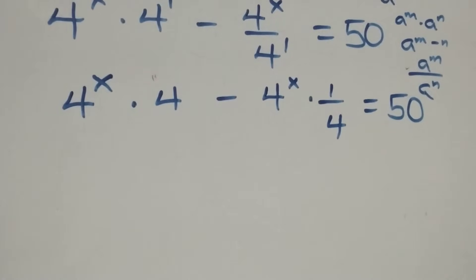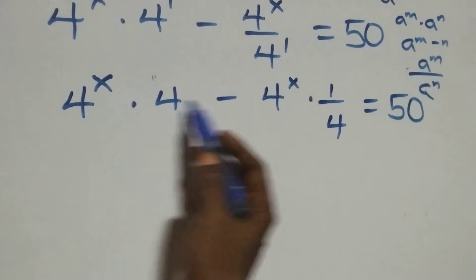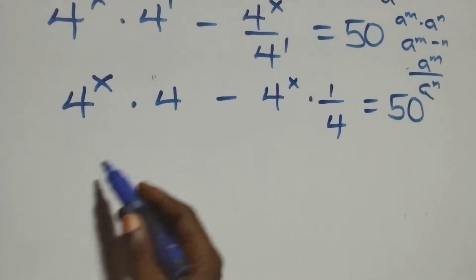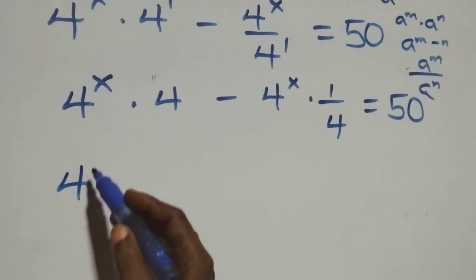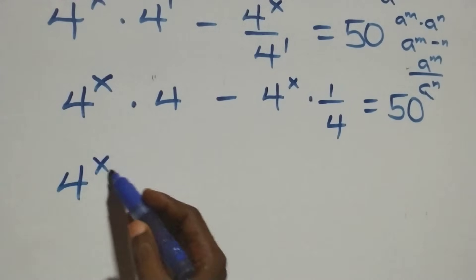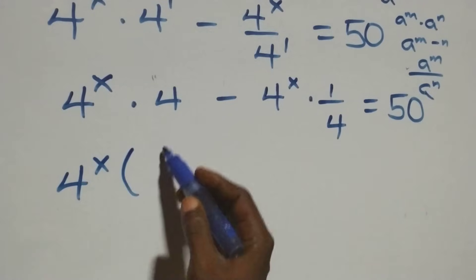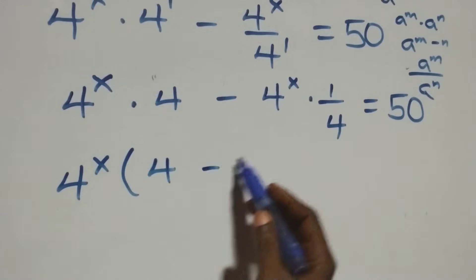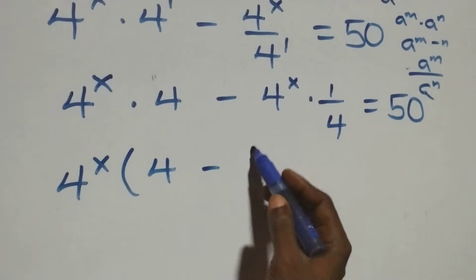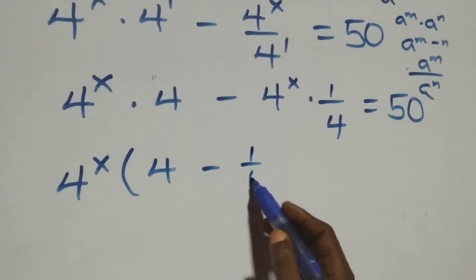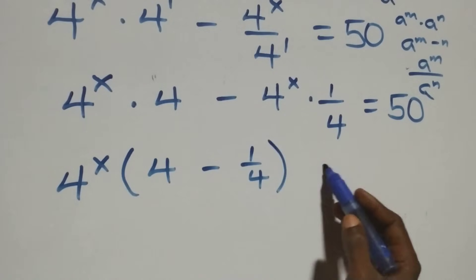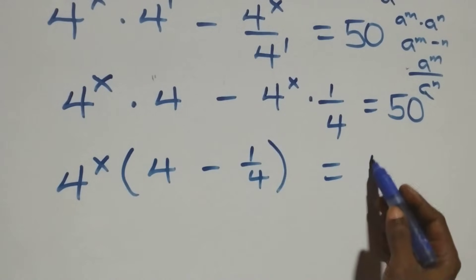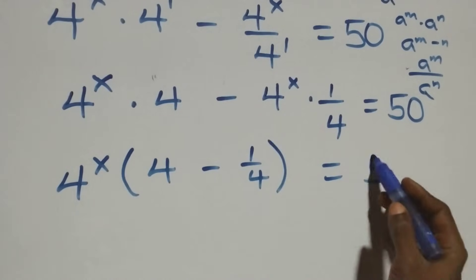Next step: we have 4 raised to power x as a common factor, we factor it out. We have 4 raised to power x into brackets: 4 minus 1 over 4, close brackets, equals 50.